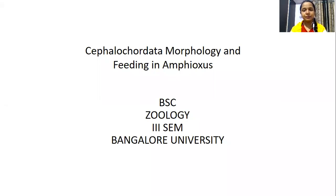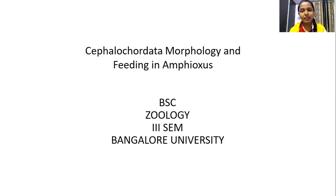Hello everyone. Today in this video I'll be discussing the Cephalochordata. I'm going to explain Cephalochordata morphology and feeding of amphioxus. Cephalochordates are organisms having the chordate features, that is the presence of notochord and the nerve cord throughout their body, from the anterior end to the posterior end. We are mainly focusing on the amphioxus, discussing its morphology and feeding.